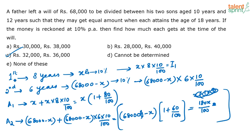For the first son, it will take 8 years to turn 18, so X rupees — that is 32,000 — is invested for 8 years at 10% interest. For the second son, he will turn 18 in 6 years, so 68,000 minus X — that is 36,000 — is invested for 6 years at 10%. The amount each gets at the end should be equal.